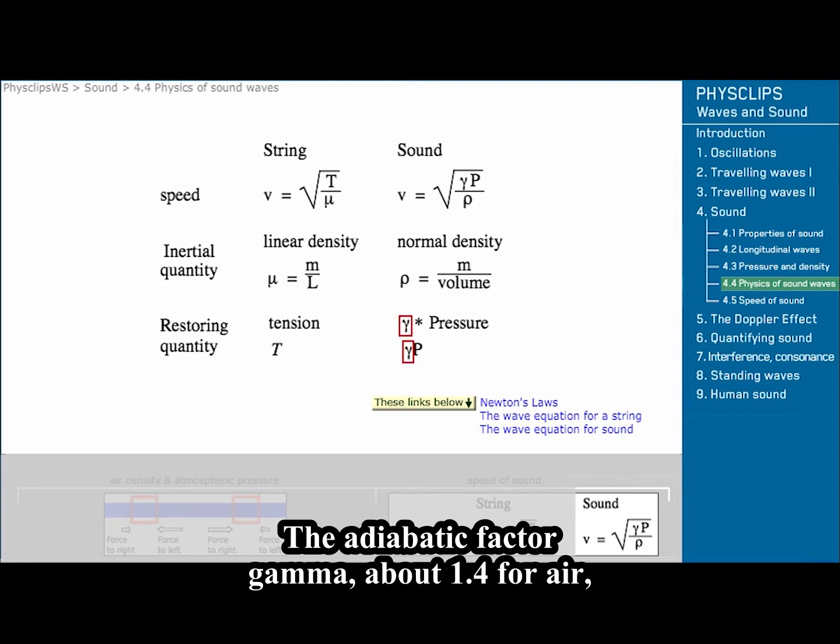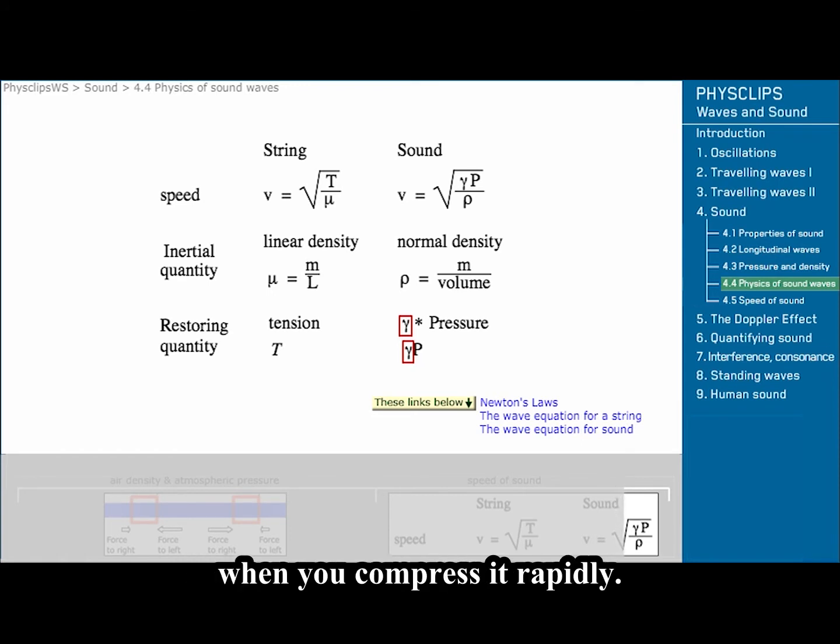The adiabatic factor gamma, about 1.4 for air, appears because air becomes hotter when you compress it rapidly. See this link for details.